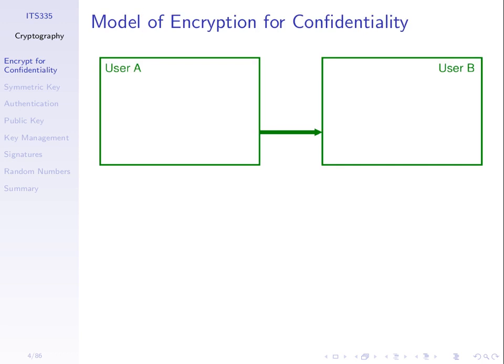A simple model is that we think there are two normal users, A and B. A wants to send a message to B, and they want this message to be confidential. When A sends a message to B, we don't want anyone else in the world to be able to read that message except B. We'll represent any other attacker as just one other user, user C.